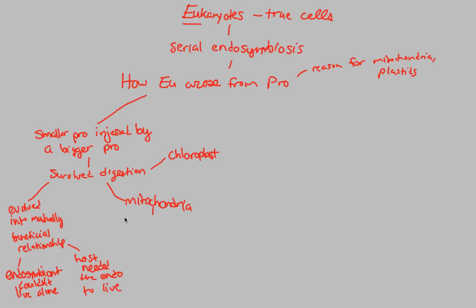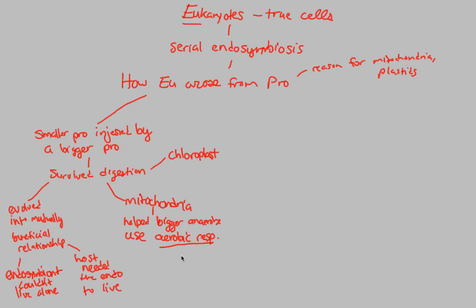The mitochondria helped the bigger anaerobe — because the anaerobe used fermentation for energy — it helped the bigger anaerobe use aerobic respiration instead. Because the mitochondria, as a former aerobe, knew how to use oxygen very efficiently. It essentially taught the host cell to use aerobic respiration. That's how the mitochondria gave us this ability.